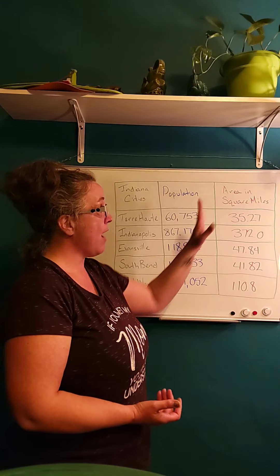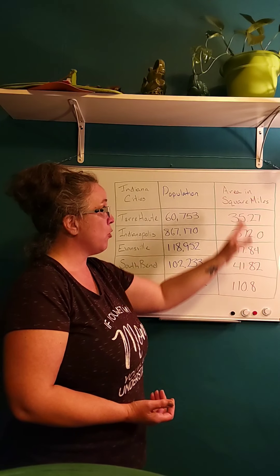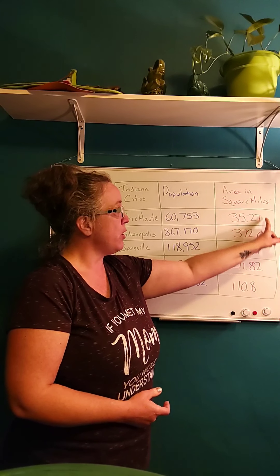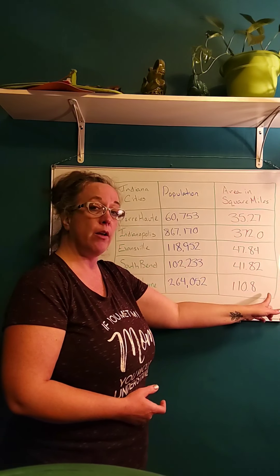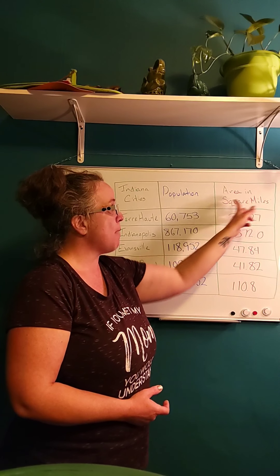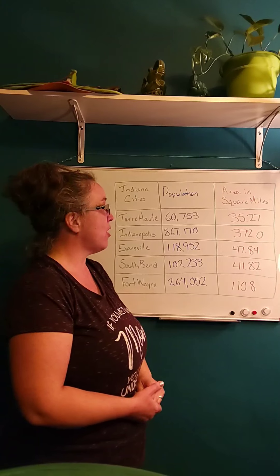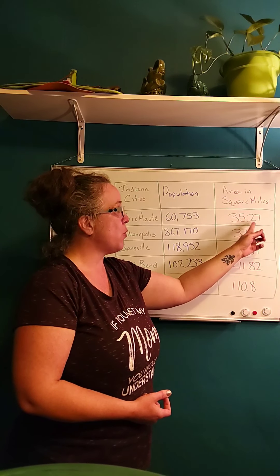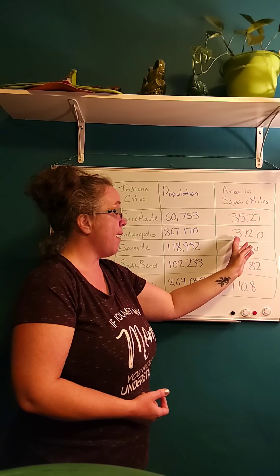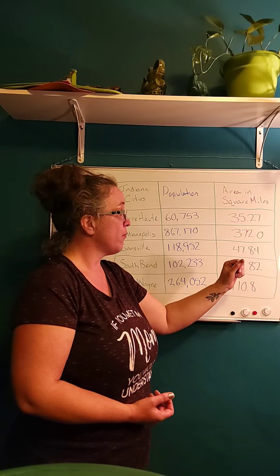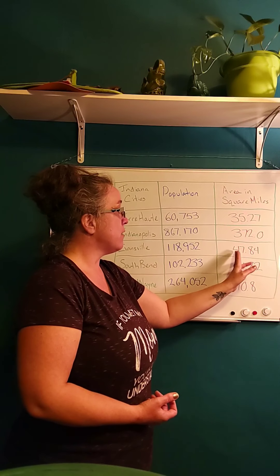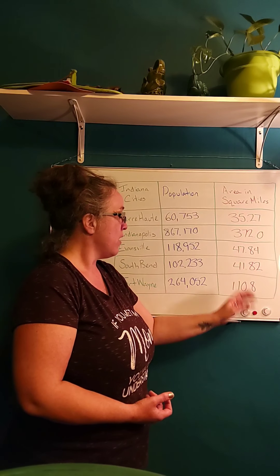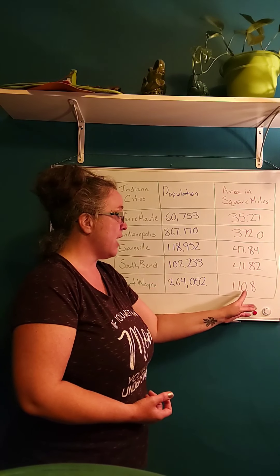Now we're looking at area in square miles. You'll notice I didn't put a unit on any of the numbers in this column because the top of the column tells me the unit. Terre Haute has an area of 35.27 square miles, Indianapolis is 372, Evansville is 47.84, South Bend is 41.82, and Fort Wayne is 110.8.